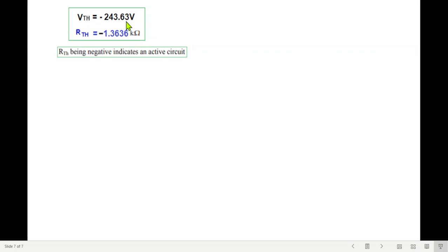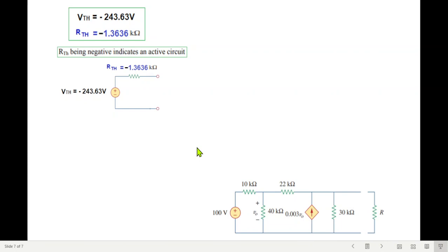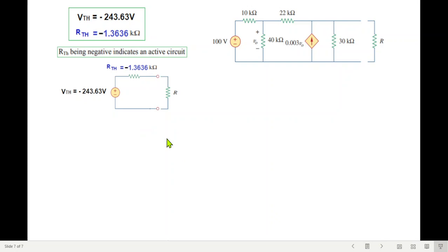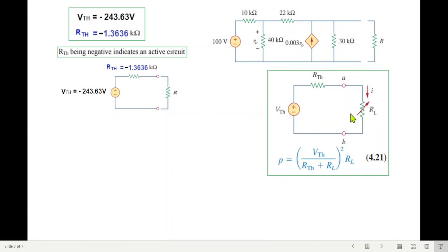Now that we have found VTH and RTH both, just a point to note that RTH is negative, that indicates that the circuit is an active circuit. So this is our equivalent circuit. And now we'll connect this load back, and now we'll use the power formula to find the maximum power across this resistance. We'll use this formula that we just discussed.